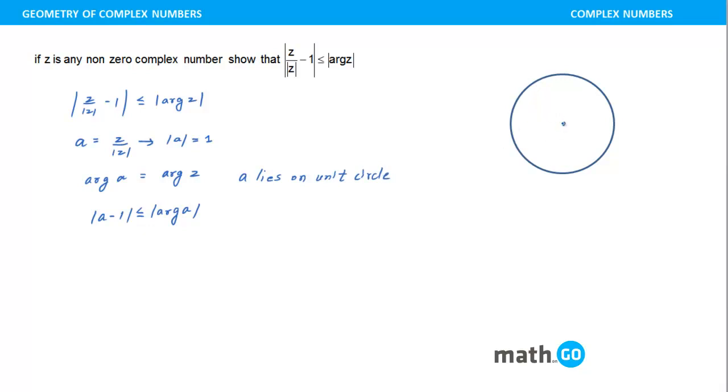So let's say this is the circle with center origin, right? Okay, and I take any point a, let's say I'll take a point a here. Right, this is, let me write capital A, this is the a, which we are talking about. Now, what is a minus 1?